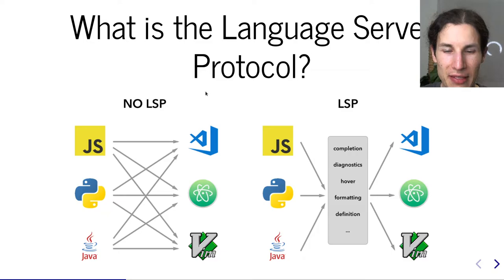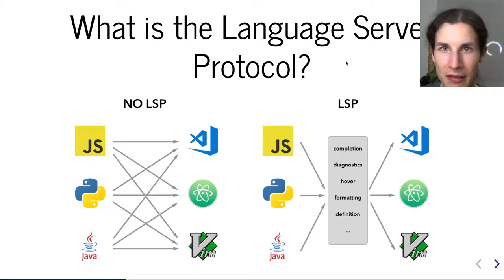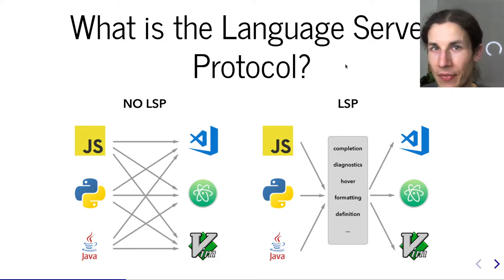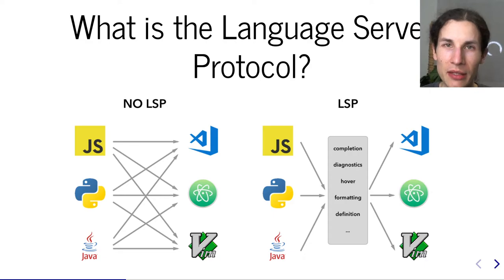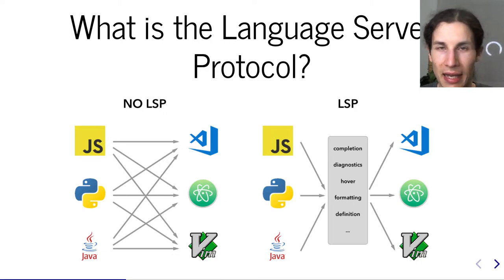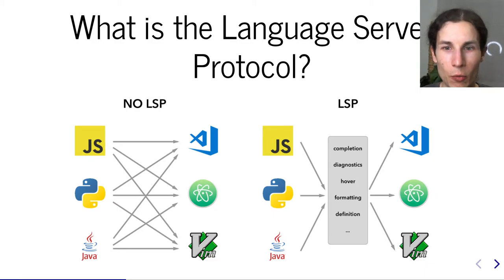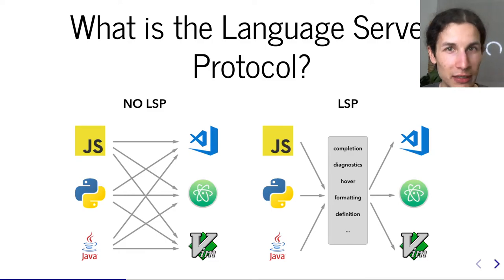The language server protocol tries to address this by defining a common protocol for all these things you want in an editor when working with programming languages: auto-completion, diagnostics, documentation showing, code formatting, jump to definition, jump to references, refactoring, etc. The language server protocol defines how a language server — some kind of backend program that analyzes your source code — works. The editor simply talks to this language server and asks: I'm at this position in this file, what can I autocomplete? Is this correct? What's the current symbol here, does it have documentation, where is it used? And so on.